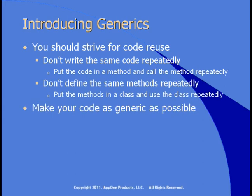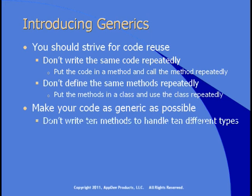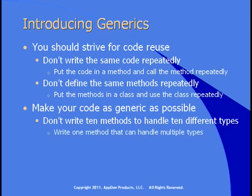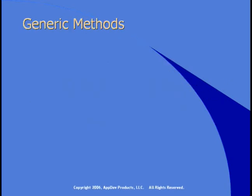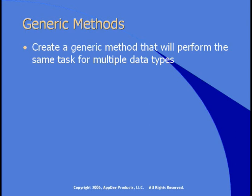Another guiding principle is to make your code as generic as possible. You don't want to write ten methods to handle ten different data types — a method that adds two integers, a different method to add two decimals, and another to add two dates. What you'd really like is one method that can handle multiple data types — a generic add method that can add two of anything. You can create a generic method that will perform the same task for multiple data types.